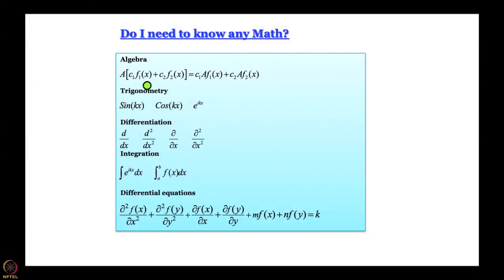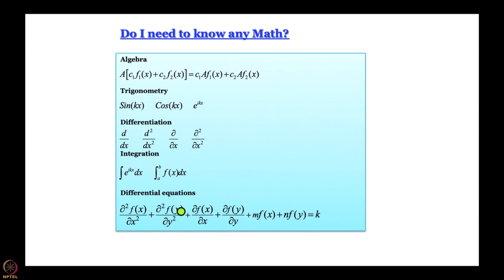To give you a brief idea: we will need algebra and a little bit of operator algebra. We are going to work with linear operators all the time — they are the main tool of quantum mechanics. We need a little trigonometry — what is sin(kx), cos(kx), e^(ikx), and the relationships between them. We will need basic differentiation, at times partial differentiation, a little bit of integration, and quantum mechanics — at least the version we will discuss — is based on a differential equation, so differential equations will be very useful.